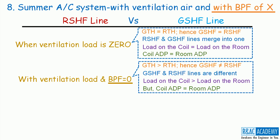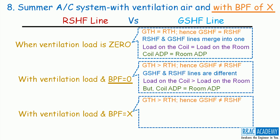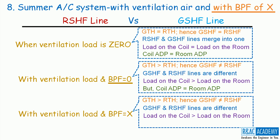Let us now look at the last case: the summer air conditioning system with ventilation air but with bypass factor equal to x. We will be discussing this case in this lecture. In this case also, GTH is greater than RTH, so the GSHF is not equal to the RSHF. The GSHF line and the RSHF line appear as two distinct lines on the psychrometric chart. The heat load on the coil is greater than the heat load on the room. However, the coil ADP will not be equal to the room ADP in this case because the bypass factor is equal to x. This is the main differentiator in this case.